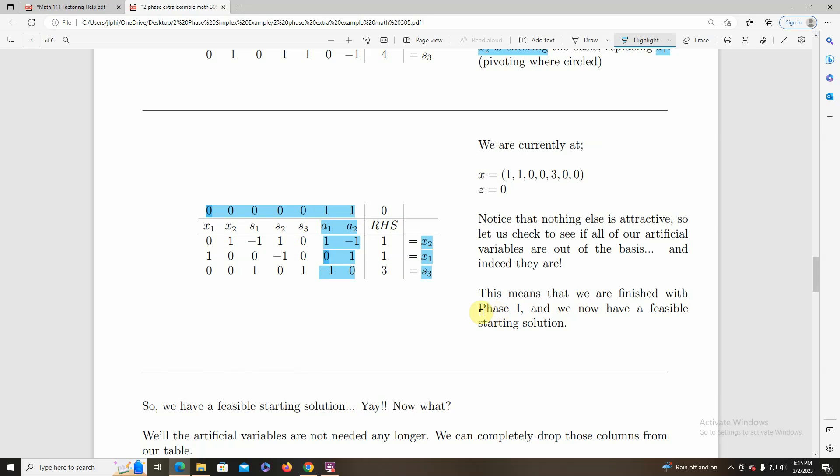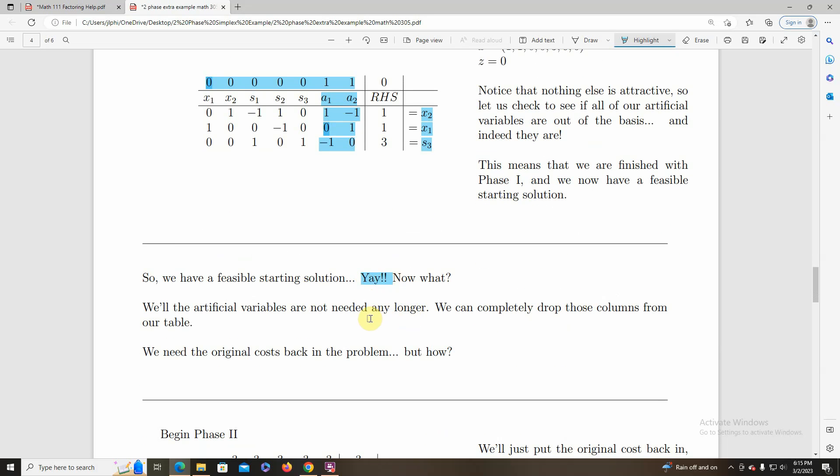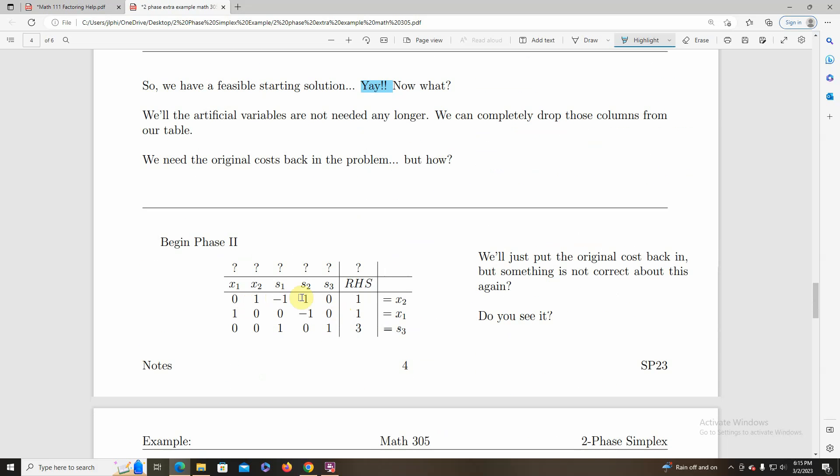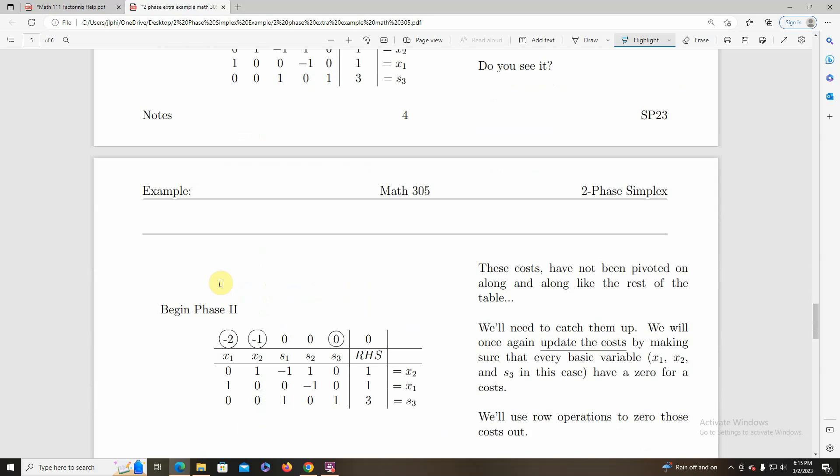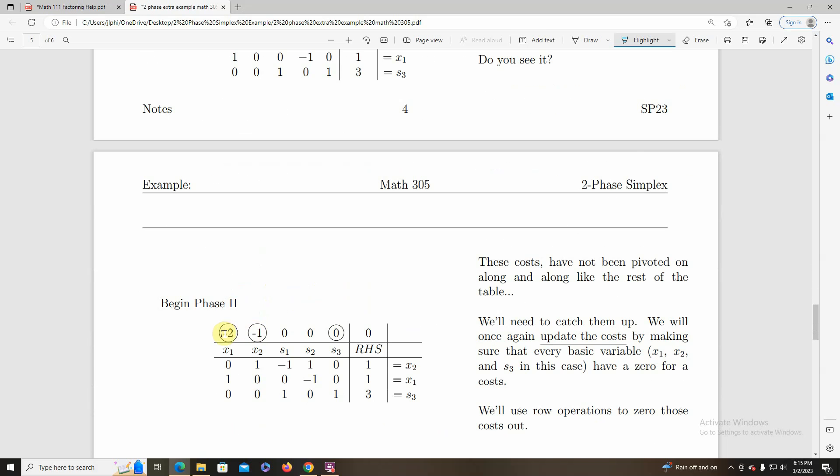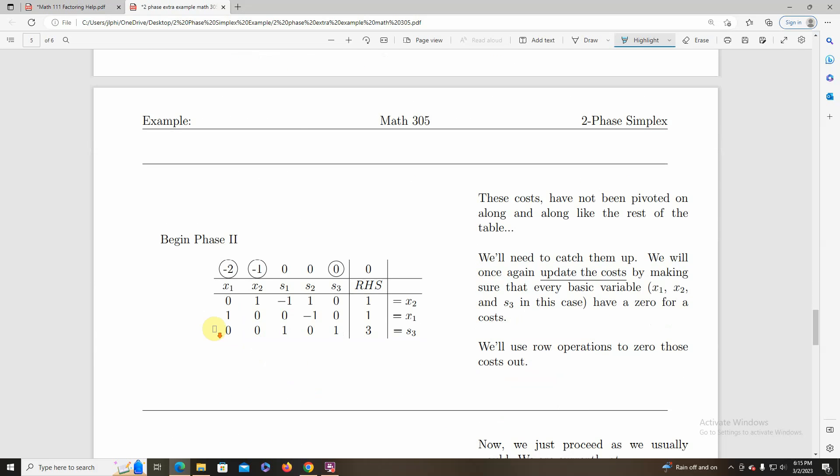So we drop the artificials and we have this table here. But notice, I don't know what the costs are. There's a slight problem here. I have original costs of the problem I can put there, but they have not been pivoted with us. We've done all these matrix operations and the cost has not been tagging along. So let's put back in the original cost, 2x1 and 1x2. Remember, we subtract them over. And so these are the original cost and the slacks all had cost of zeros.